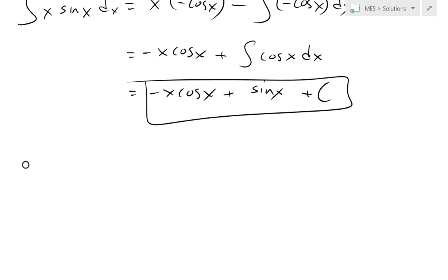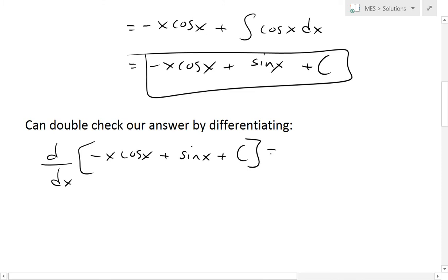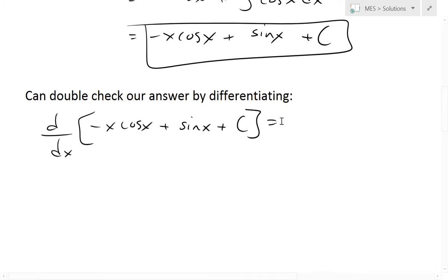We can double check by differentiating. We can double check just quickly, just to make sure it's exactly right. The derivative of this answer—because the integral is always the anti-derivative—should be the exact same as the integral we started with.